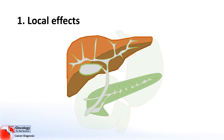The first example is local effects. As tumours grow they can press on local structures and cause organs around them to stop working properly. One example of this is the biliary system. In this diagram we can see the liver at the top, the gallbladder just underneath the liver, the bile ducts, and then the pancreas at the bottom. The normal function of the biliary system is to drain bile which is produced by the liver, and bile emulsifies fats — changing their structure so that they're able to be digested and absorbed.